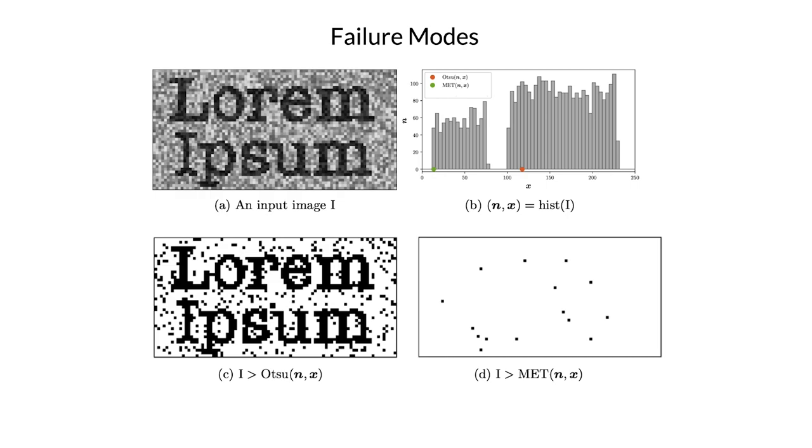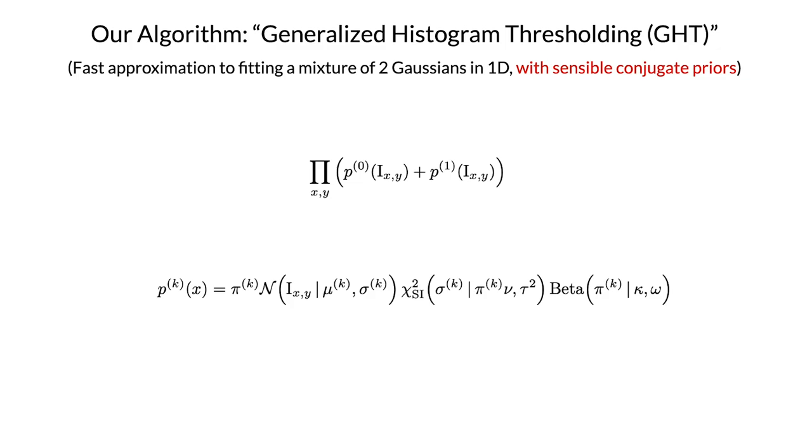So to fix this, I just tried a somewhat straightforward approach of doing map estimation using a regularized mixture of Gaussians. There's nothing too fancy here. This is just a mixture of two Gaussians with a scaled inverse pi-square distribution used as a prior on the variance and a beta distribution used as a prior on the mixture probabilities. These are just typical conjugate priors you might use in this setting.